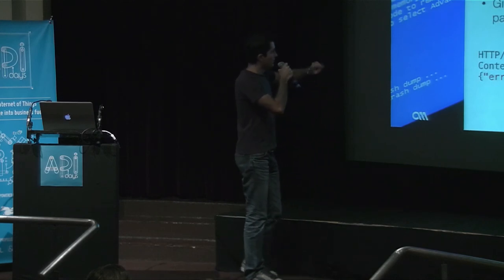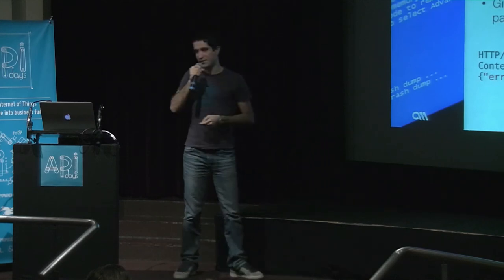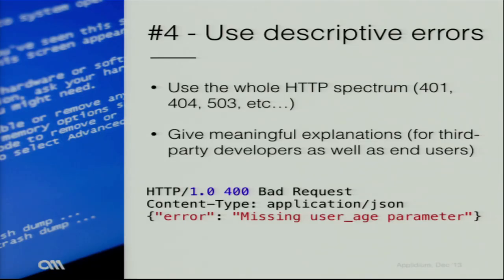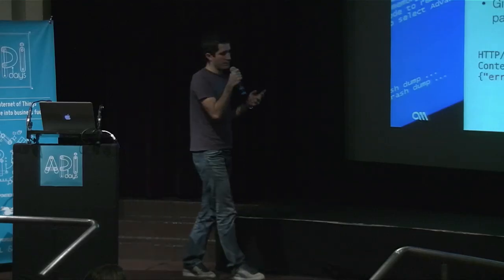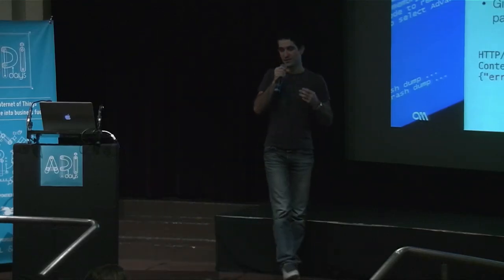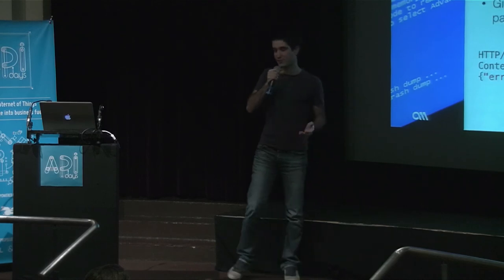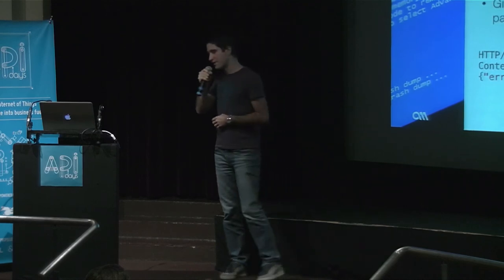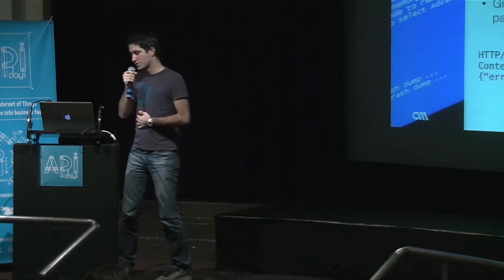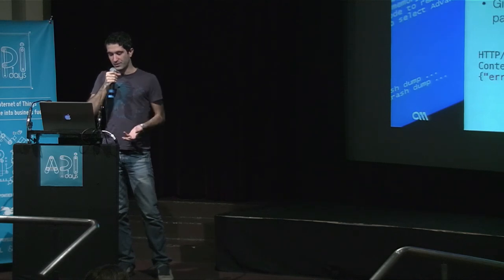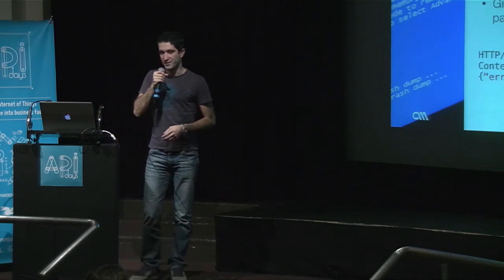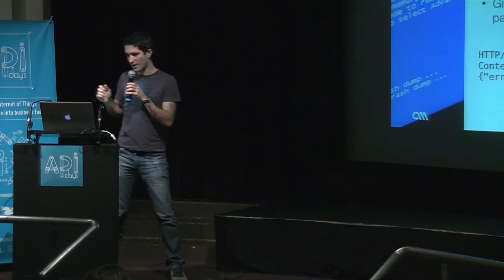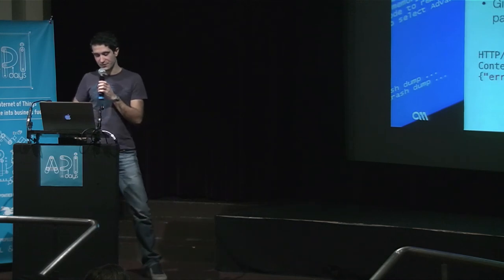For end users, it's very important as well. When something goes wrong, you want to notify users. If you just pop up something that says 'error,' it's not helpful for developers or for users. So you really want explicit error messages that can be displayed — and ideally, you should localize them.